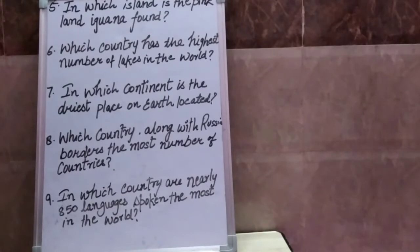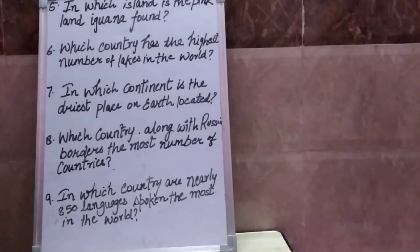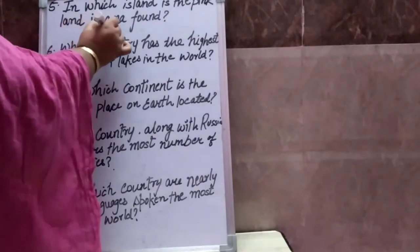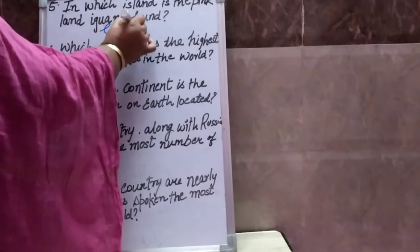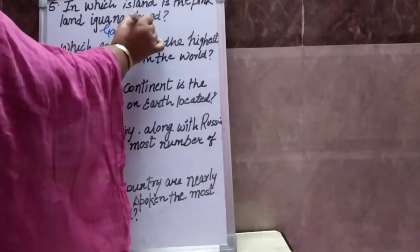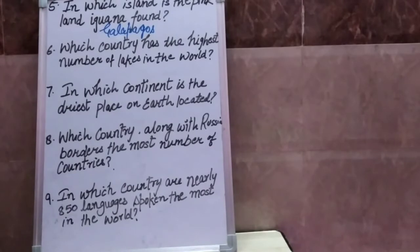Question number five: In which island is the pink land iguana found? Gulabi bhoomi iguana kis dweep mein, means koun se island mein paaya jata hai? Your answer is Galapagos.